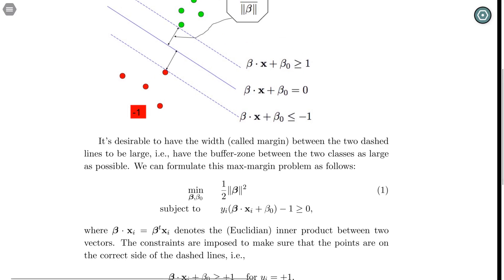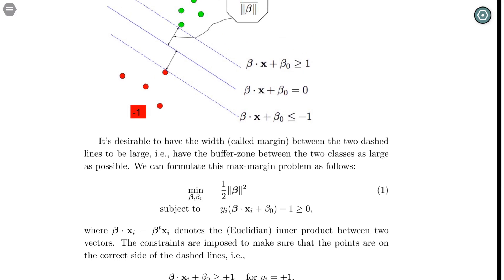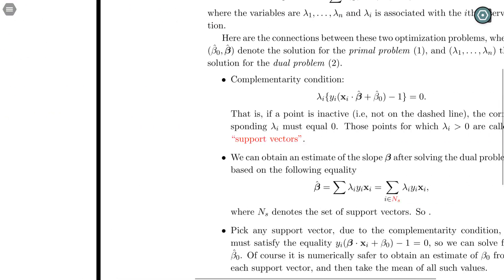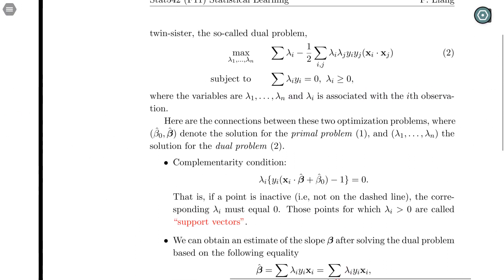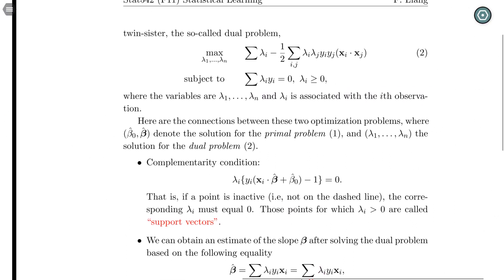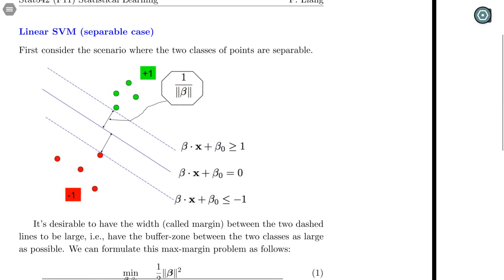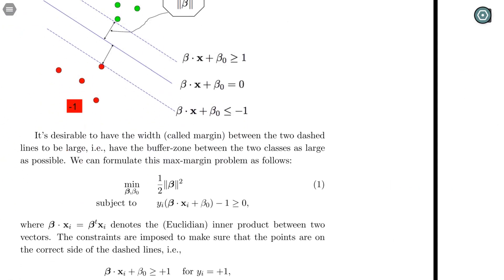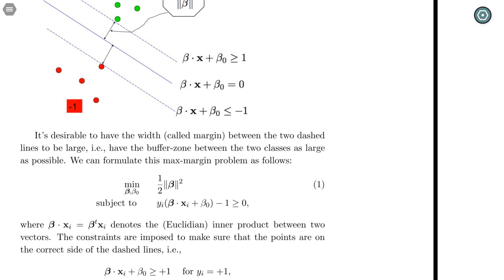But instead of solving this constraint optimization, we are solving this so-called dual problem, where the primal problem is an optimization in terms of the slope beta and the intercept beta_0.